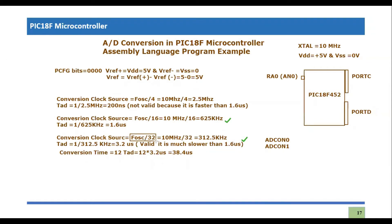That means Fosc/32 is the selected clock source. The clock source selection bits ADCS[2:0] value for Fosc/32 should be 010. So ADCS0=0, ADCS1=1, and ADCS2=0.